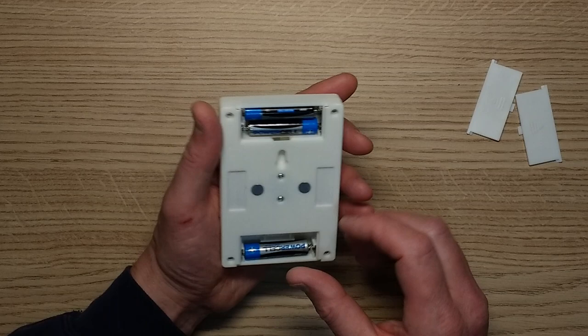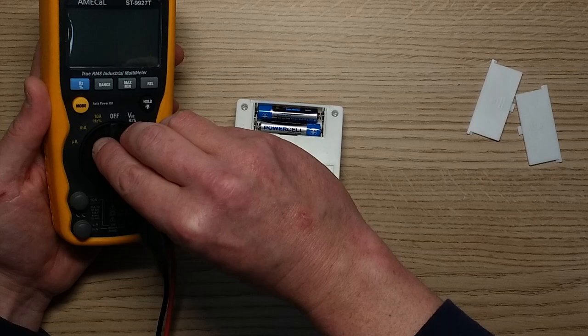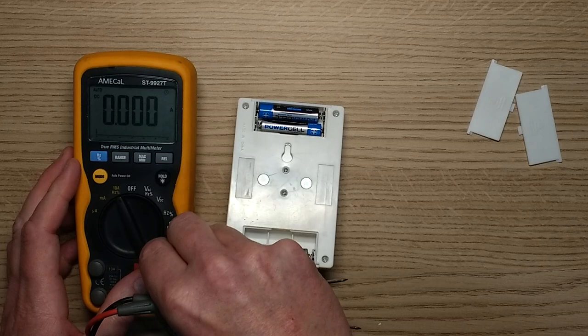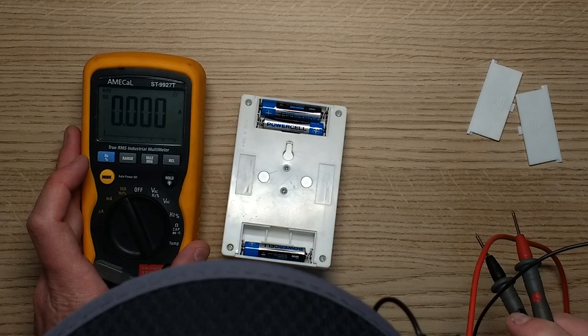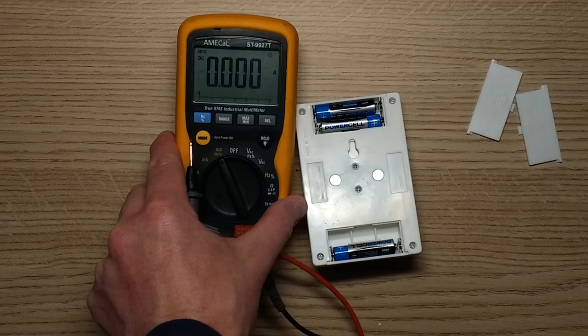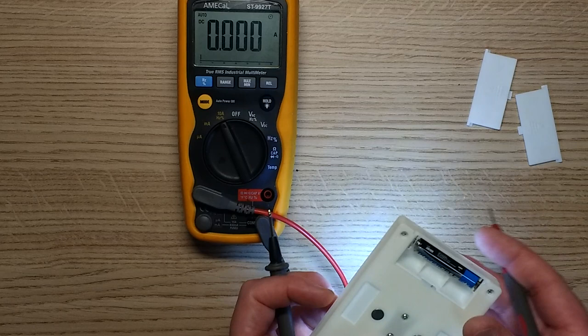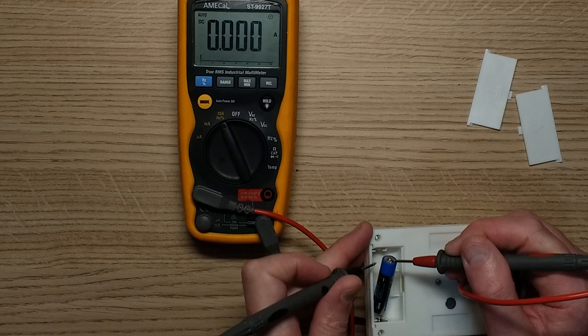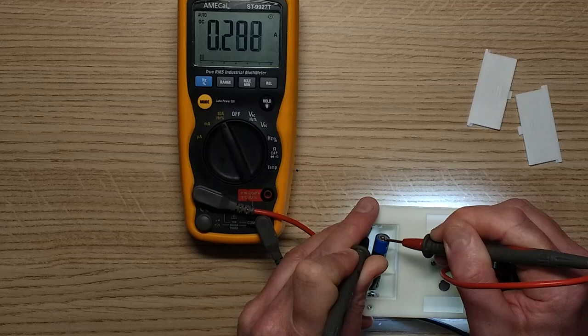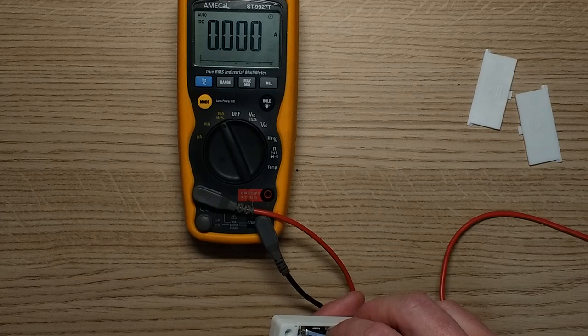I wonder what current it draws. Let's check that. I'll put this to the 10 amp range and put the probe into the 10 amp position. We'll interrupt one of the batteries to connect into this. Let's turn this on and then I shall hike that out and put the meter in series. This will give a rough indication. It's showing about, let's say, 300 milliamps.